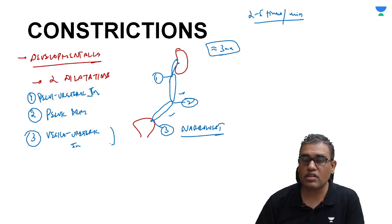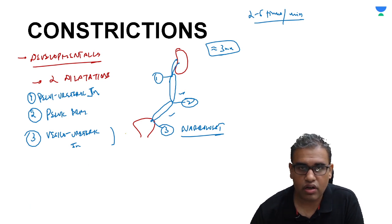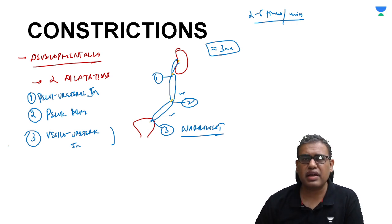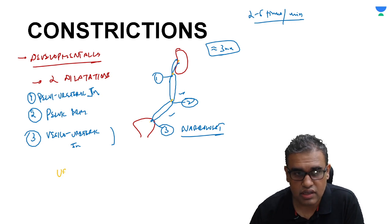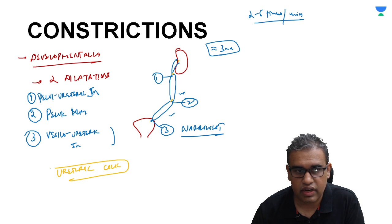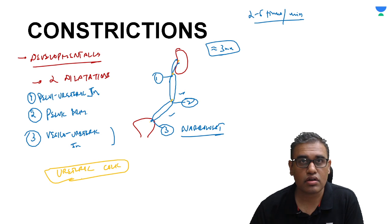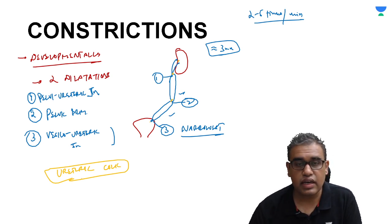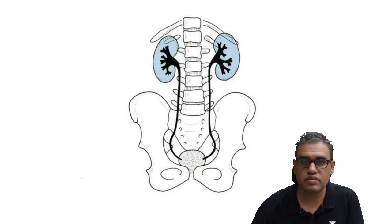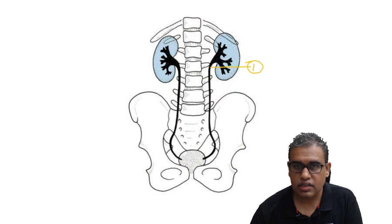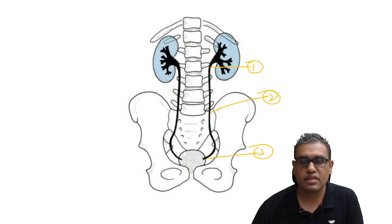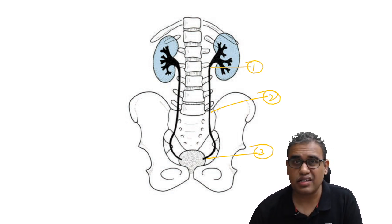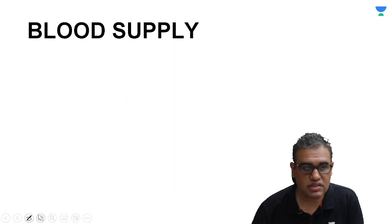The clinical importance of constrictions: kidney stones dropping down may get stuck at any of these three sites, causing ureteric colic — severe pain, bleeding, and increased peristalsis. Investigations like ultrasound, X-ray (KUB), or CT scan help localize the obstruction and plan management. On X-ray, the constrictions correspond to bony landmarks — look for opacities overlying these areas. The narrowest is at the vesicoureteric junction.